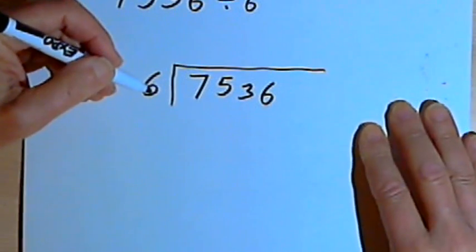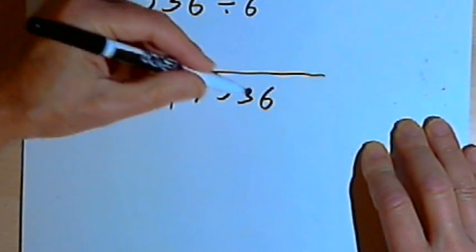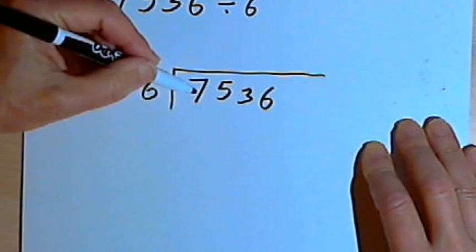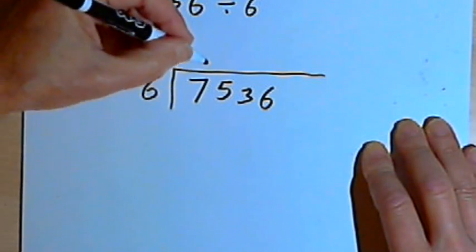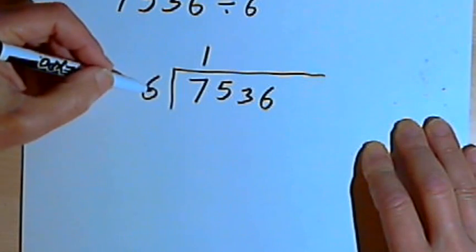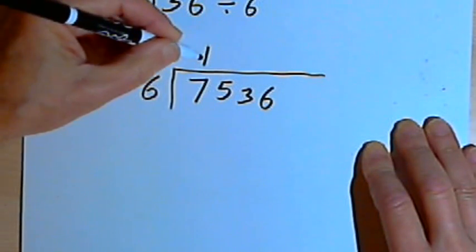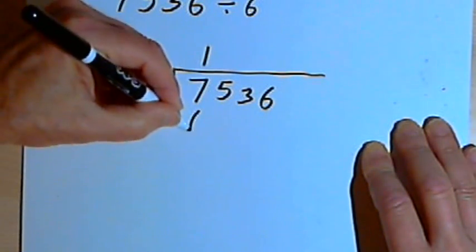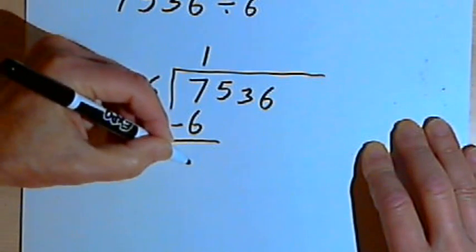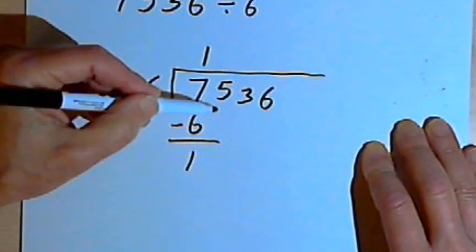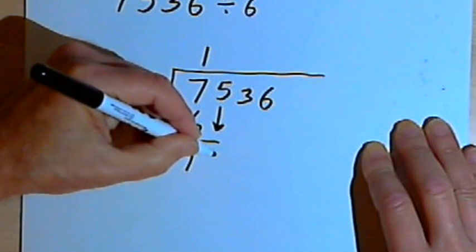And now the process goes like this. I take that 6, which is called my divisor, and I look at the number I'm dividing. If I can divide it into the first digit, then I do that. So 6 can be divided into 7. It goes in one time. So above that 7, I'll write a 1 for the number of times that I can divide 6 into 7. Now I'm going to take that 1 and multiply it by the 6. So I take the 1 and multiply it by the divisor. 1 times 6 is 6. I'll write that underneath the 7 and subtract it from the 7. So 7 minus 6 is 1.